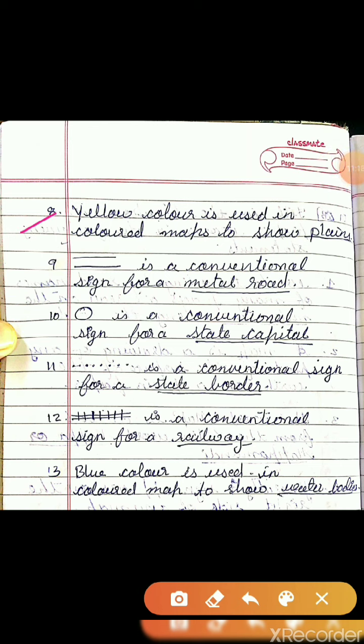Statement 8: Yellow color is used in a colored map to show blank. The answer is plains.